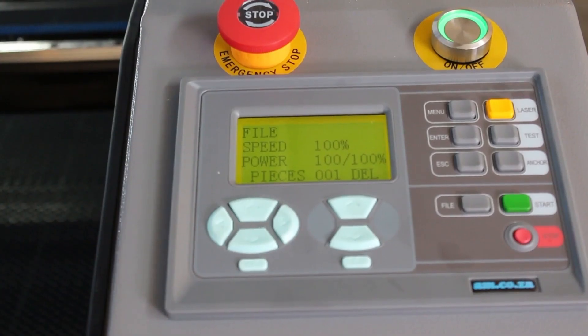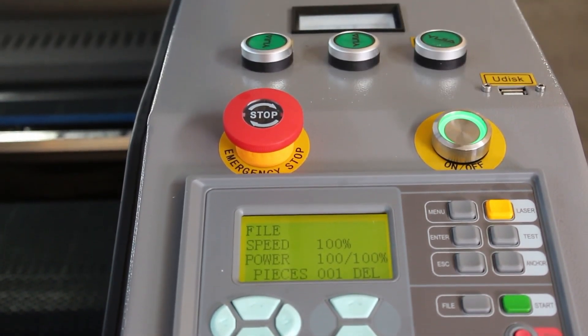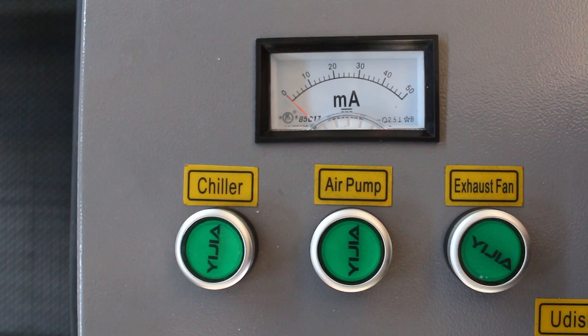Now let's move up and you can see the control panel with Z axis control and a file selection button plus the anchor function and other features. There are three switches for cooling, air and extraction fan control for easy access during your cutting job.